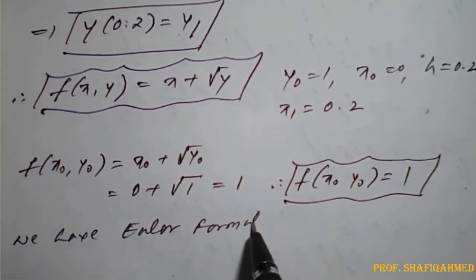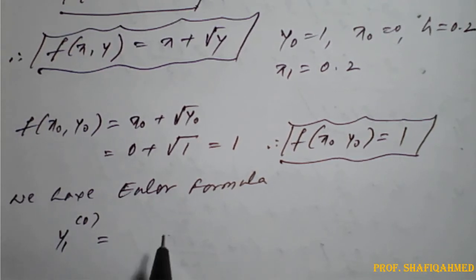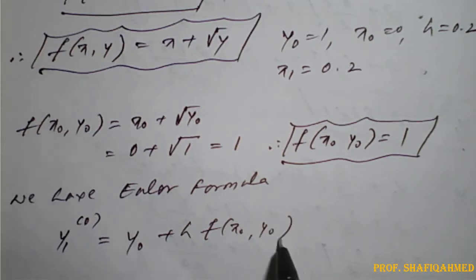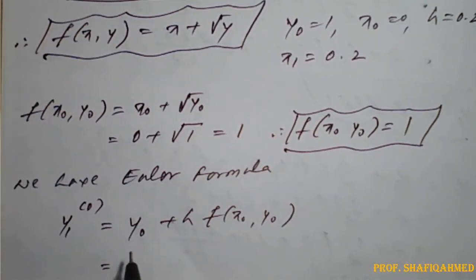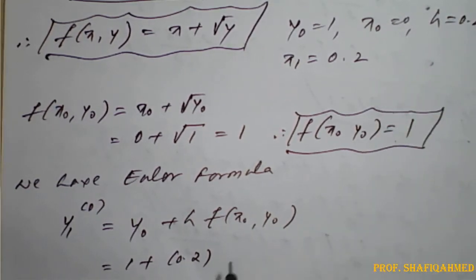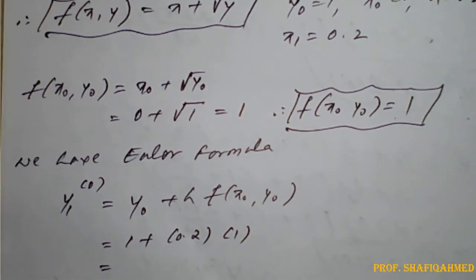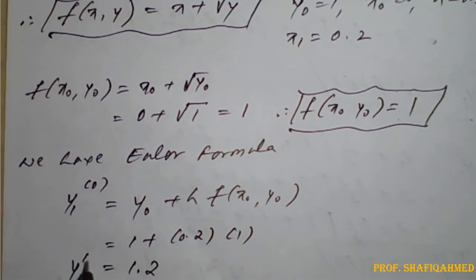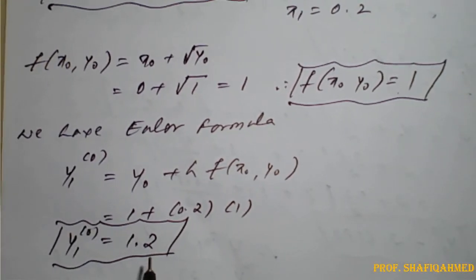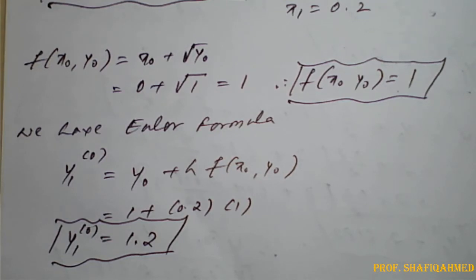Now applying Euler's formula for the initial prediction: y1^(0) = y0 + h · f(x0, y0). Substituting the values: y0 = 1, h = 0.2, and f(x0, y0) = 1. So y1^(0) = 1 + 0.2 × 1 = 1 + 0.2 = 1.2. This is our predicted value — our answer should be around 1.2.